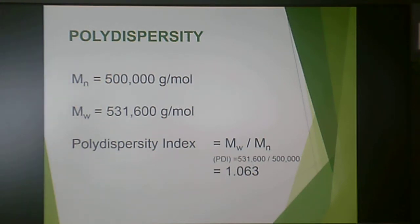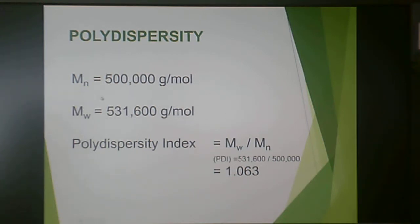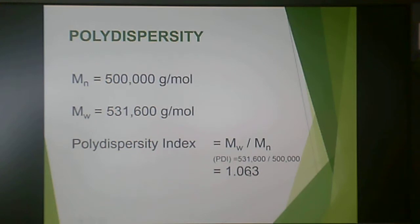Going back to those previous numbers: the tables generated an M sub N of 500,000 g/mol and a weight average molecular weight M sub W of 531,600 g/mol. Polydispersity index is M sub W divided by M sub N, giving a PDI of 1.063 for this sample. This is very typical for man-made polymers. The polydispersity index is almost always greater than 1 — meaning M sub W is greater than M sub N — and often falls around 2 to 2.5.